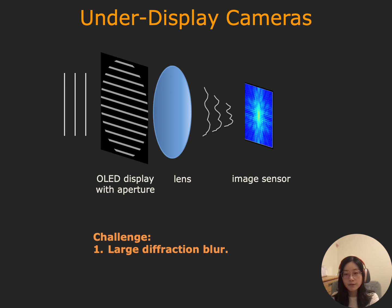Due to the small features on the display, the size of this blur kernel is large, often spanning hundreds of pixels in the image plane, which results in a severely blurred photograph. This deblurring is further complicated by the low SNR of the captured image, since the display panel blocks a large portion of light.